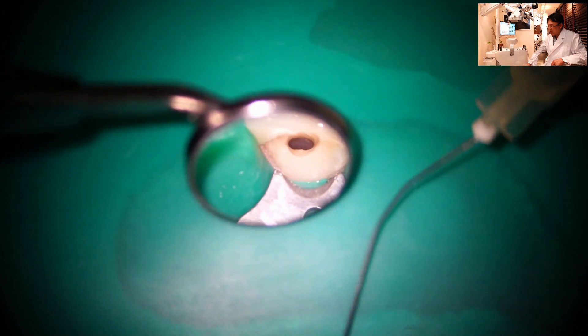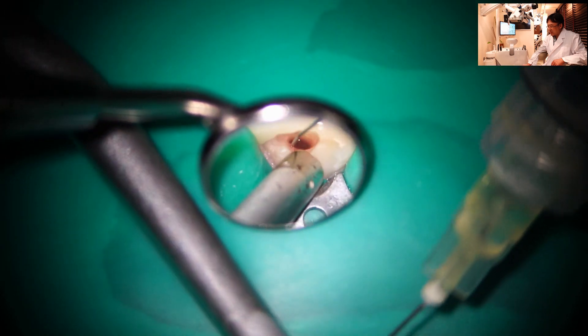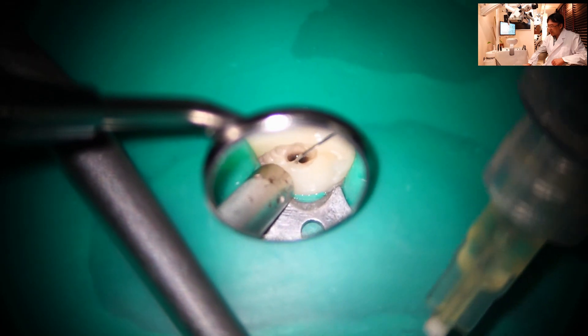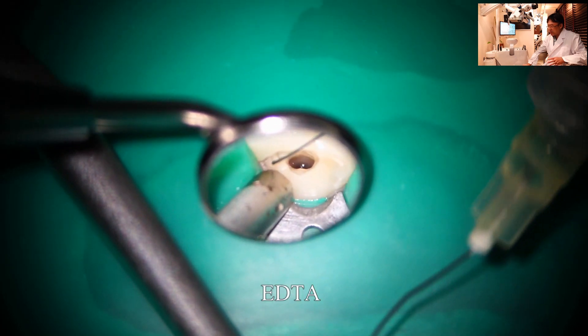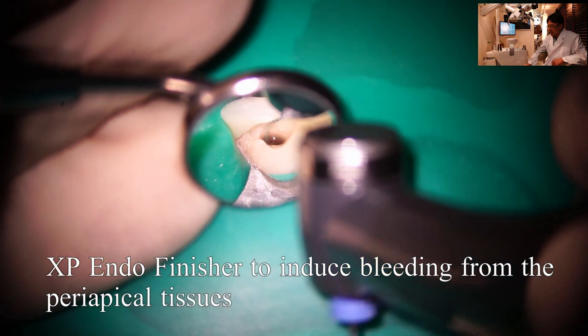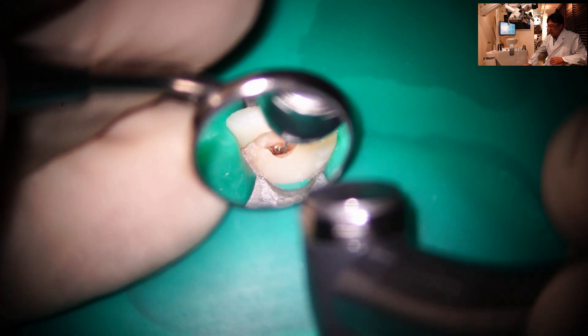So I'm irrigating the canal with sodium hypochlorite and EDTA. Then I want to induce bleeding with a next endodontic file.